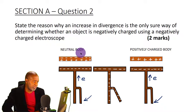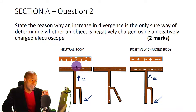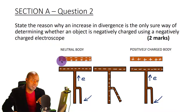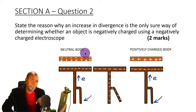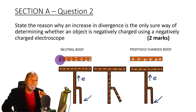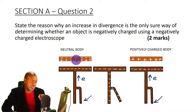Here is a neutral body - for the sake of understanding the interaction, I have shown the charges on it. A neutral body has equal numbers of electrons and protons - for every proton there is an electron. When we bring this neutral body close to the cup of a negatively charged electroscope, the negative charge on the electroscope is going to induce a positive charge on the near side of the neutral body.